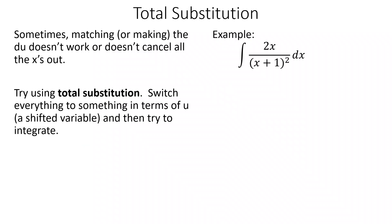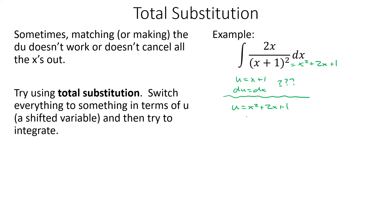Sometimes getting our u and our du doesn't match up very well. For instance, if we try this integral, the first thing I would usually try is u equals x plus 1 — just what's inside. Then du equals dx, and we're still left with this 2x on top. So that didn't work. Maybe we'll square this out — x squared plus 2x plus 1 — and try u equals that. Then du would equal 2x plus 2 dx. We've got a 2x, but we can't add to try and match our du's. We can't add in here because it's times dx.